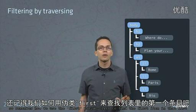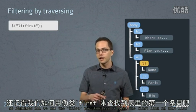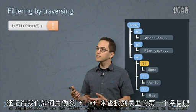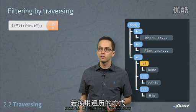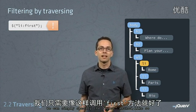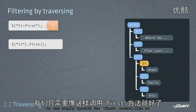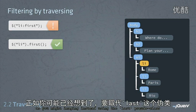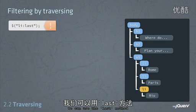So remember how we used the first pseudo class to find the first item in that list? To do that using traversing, we can simply specify the first method. As you might imagine, instead of using the last pseudo class, we can use the last method.